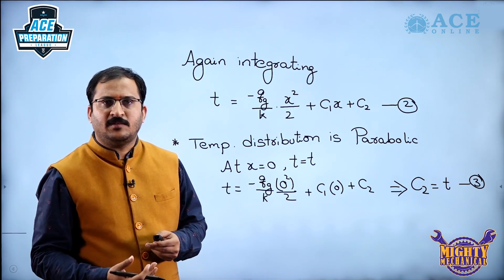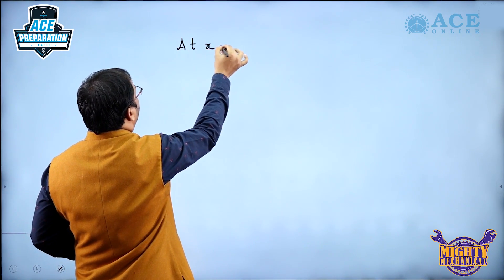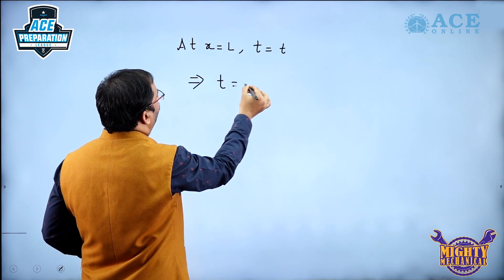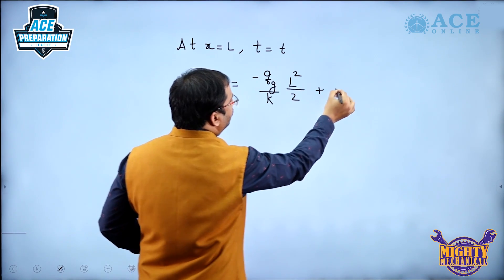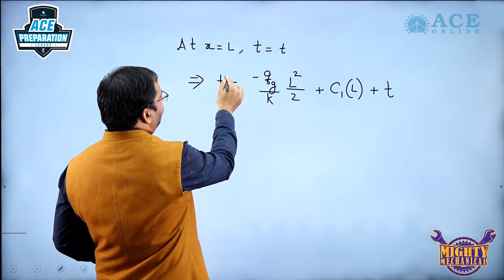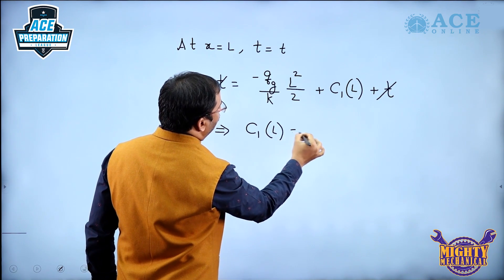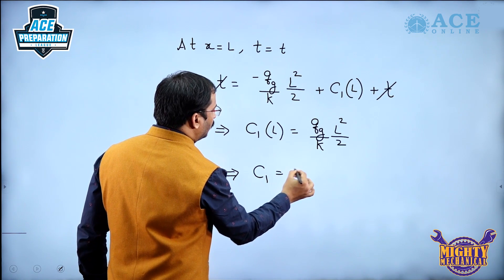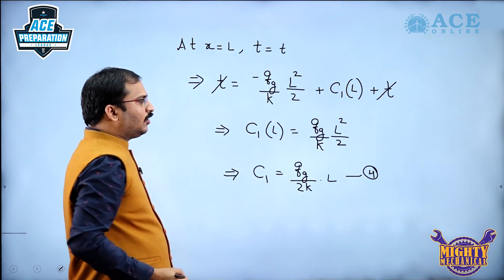Using the other boundary condition: at x = L, temperature is also T_w. Substituting into equation 2, we get T_w = −(qg/k)·(L²/2) + C1·L + C2. Since C2 = T_w, these T_w terms cancel. We get C1·L = (qg/k)·(L²/2), so C1 = qgL/(2k). This is equation 4.